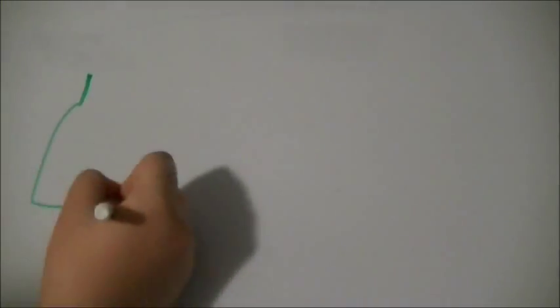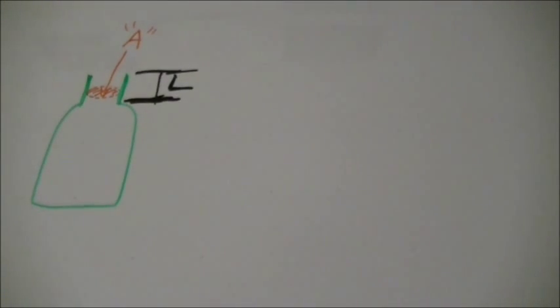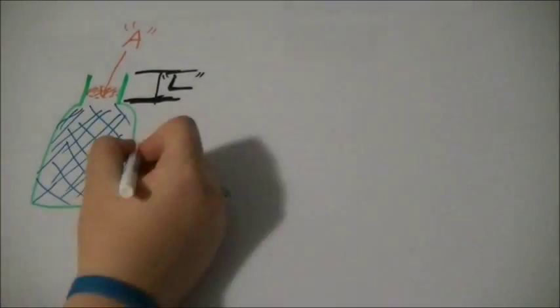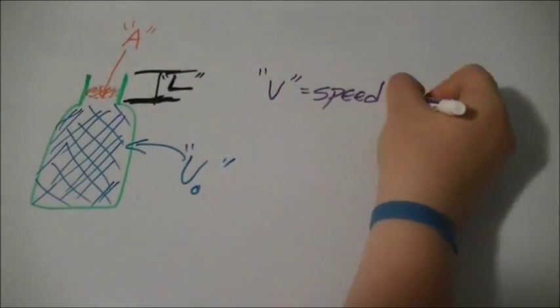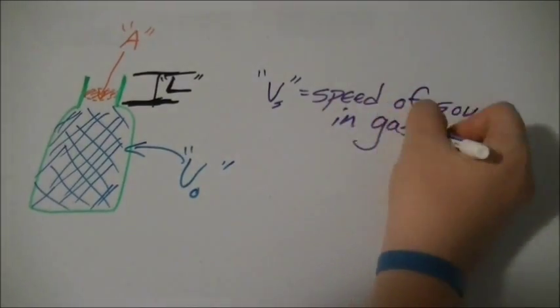Alright, so we're bringing the bottle back again. Okay, so the neck of the bottle has a certain length that we're gonna call L. We also have the area of a cross section in the neck, whether it be a circle, rectangle, whatever, that we'll call A. Finally, we also have the initial air volume in the cavity, big V0, and the speed of sound in gas, which is little Vs.